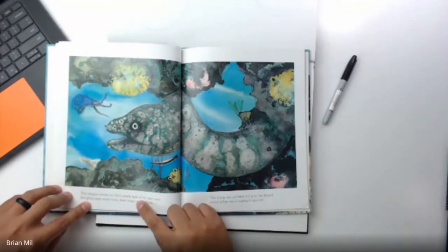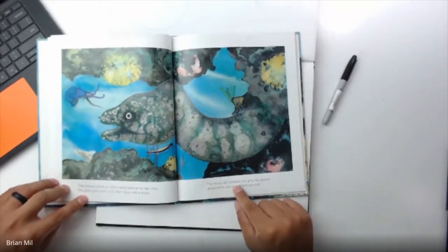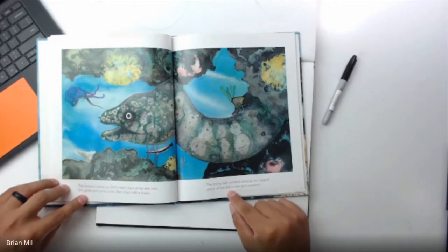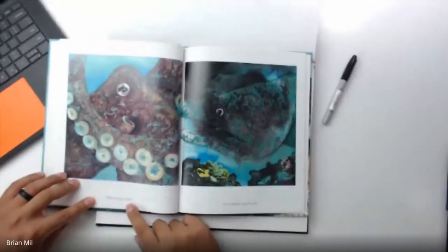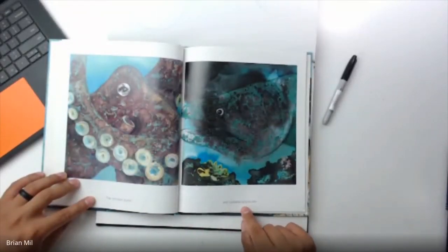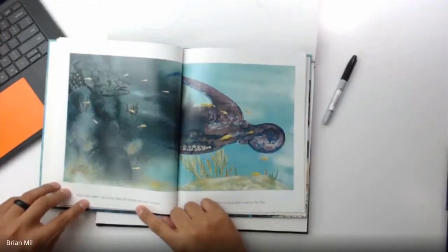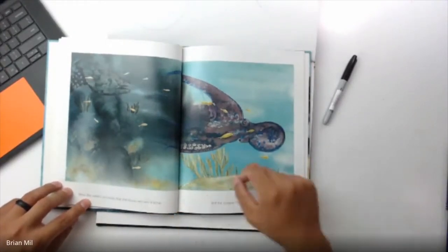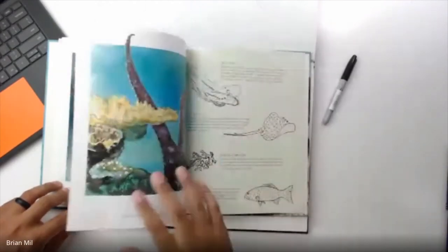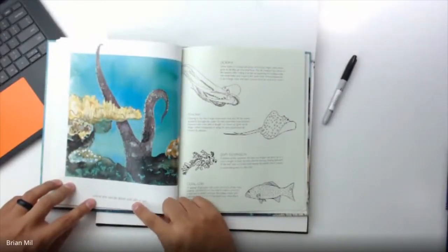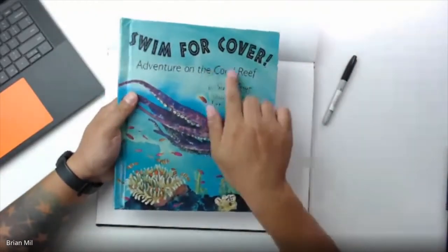The octopus swims on. She's nearly back in her den now. She glides past some rocks and then stops with a shot. The moray eel, wrinkled and gray, has slipped ahead of her and is waiting to pounce. The octopus stares and suddenly squirts ink. Now the water's so murky that the moray eel can't find her, and the octopus finally reaches her den, where she can be alone and safe at last. So I hope you guys enjoyed that book, that was Swim for Cover, Adventure in the Coral Reef.